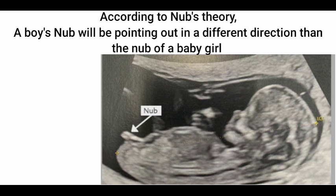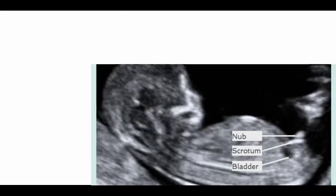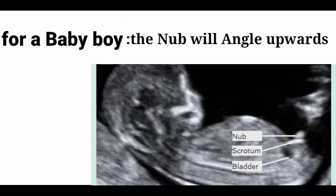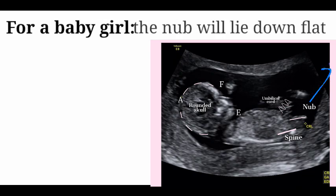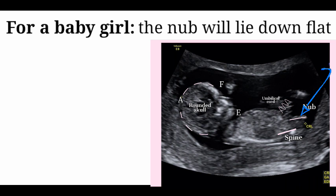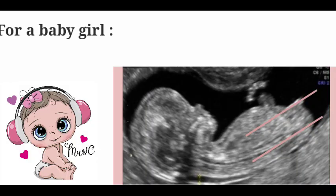According to Nub Theory, a boy's nub will be pointing in a different direction than the nub of a baby girl. If you're expecting a baby boy, the nub will angle upwards. On the other hand, if you're going to have a baby girl, the nub will lie down flat.